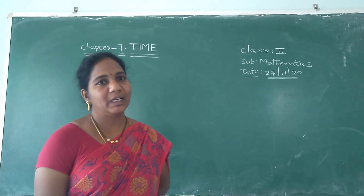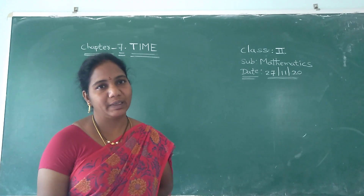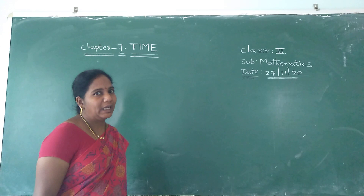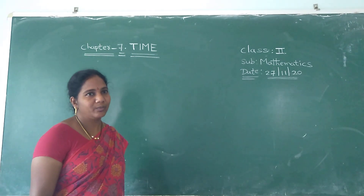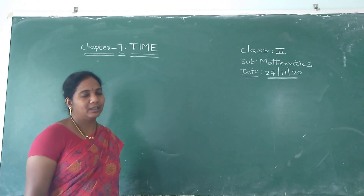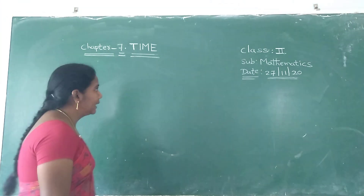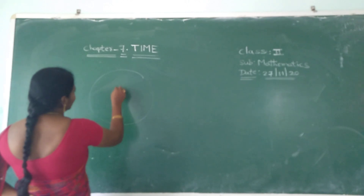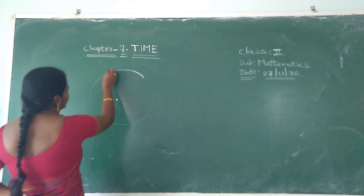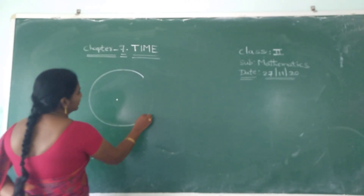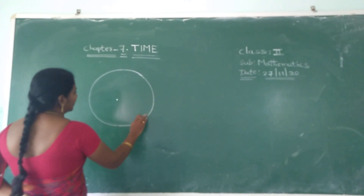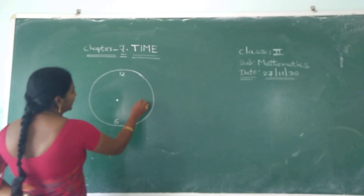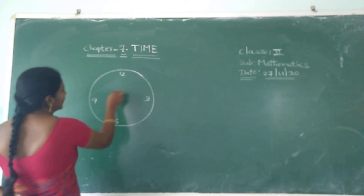So which chapter? The 7th chapter is Time — the Time chapter. Yesterday I said about the clock and how many hands are there. I said everything. Once again I am repeating that so you get it. So in the clock, how many numbers are there?